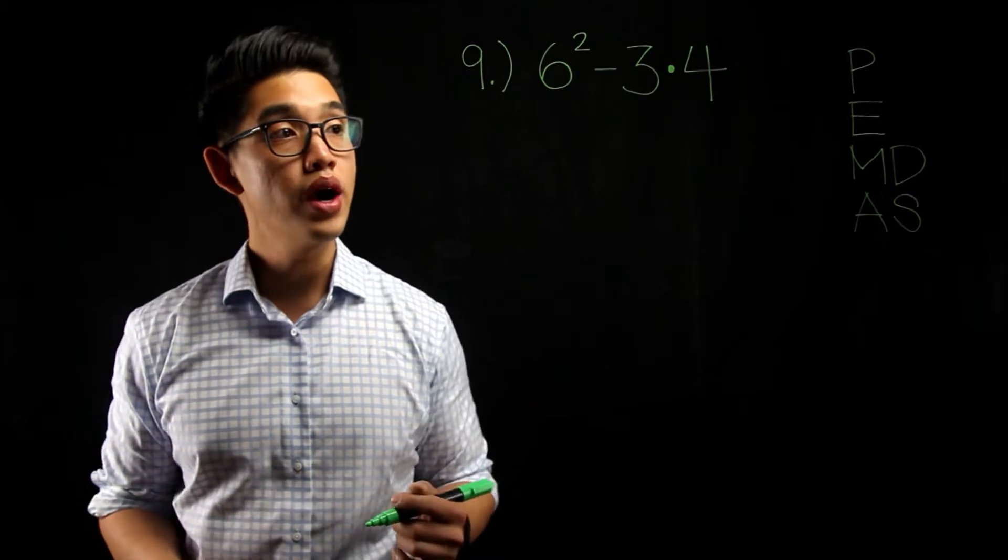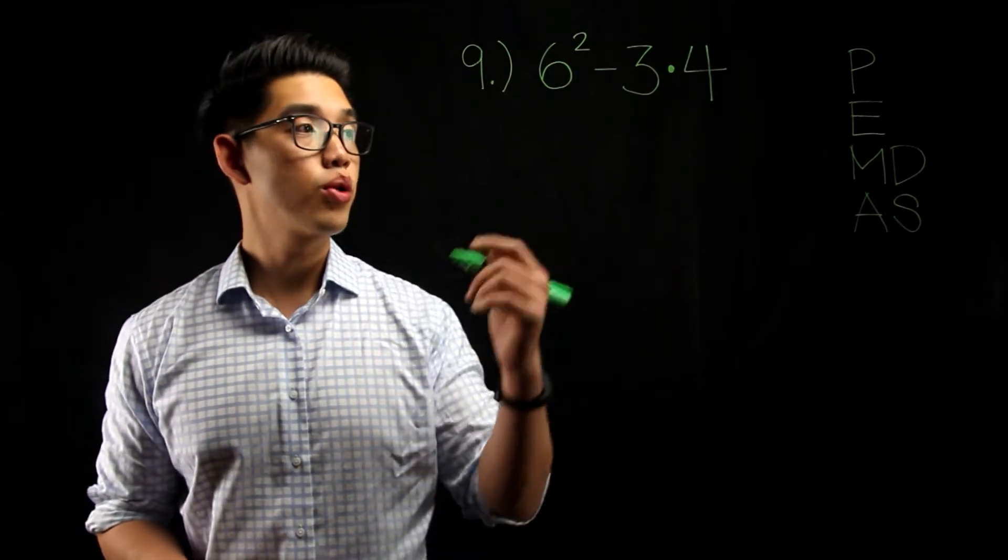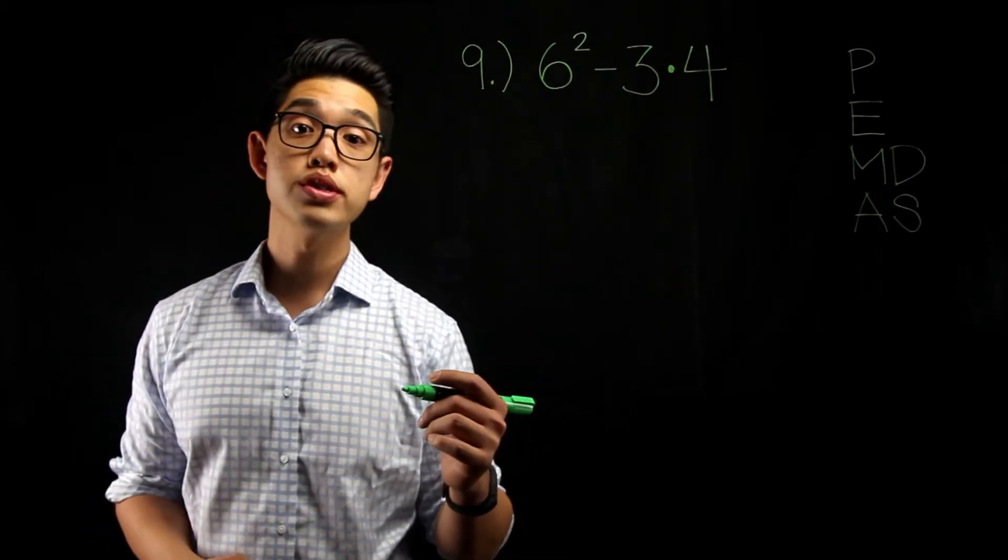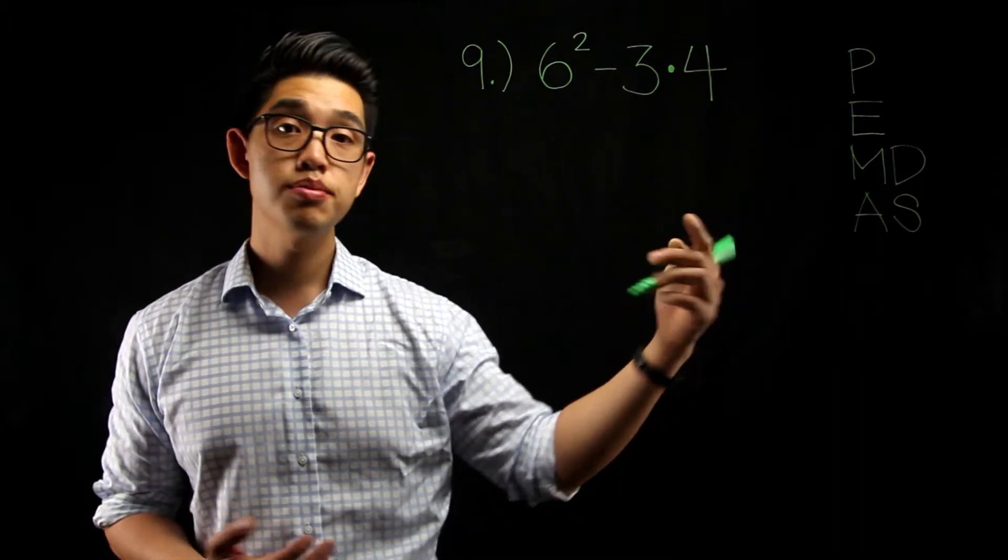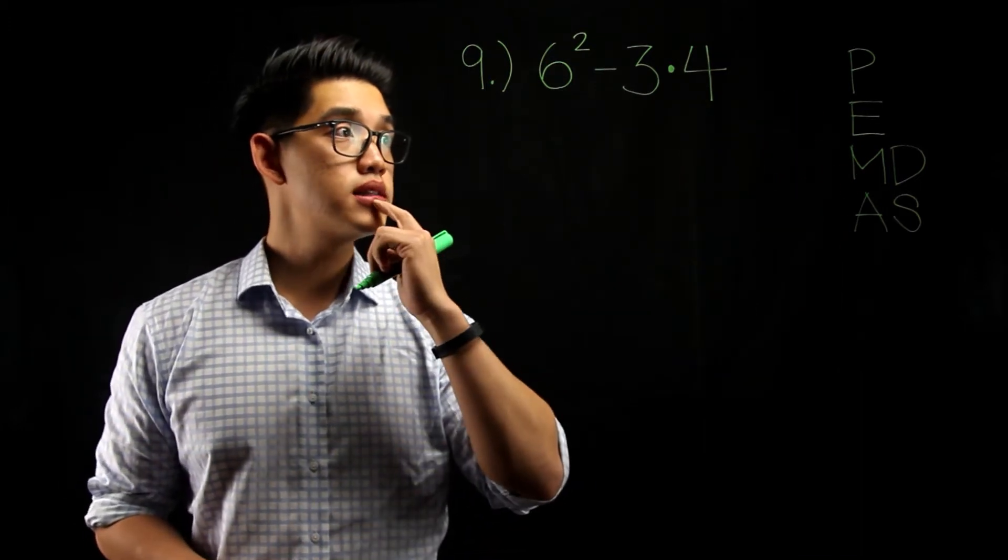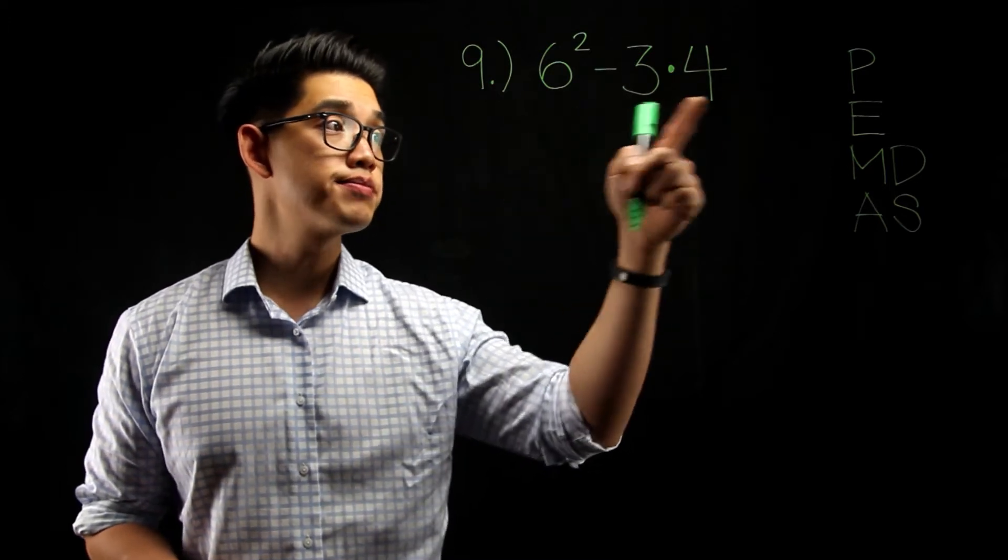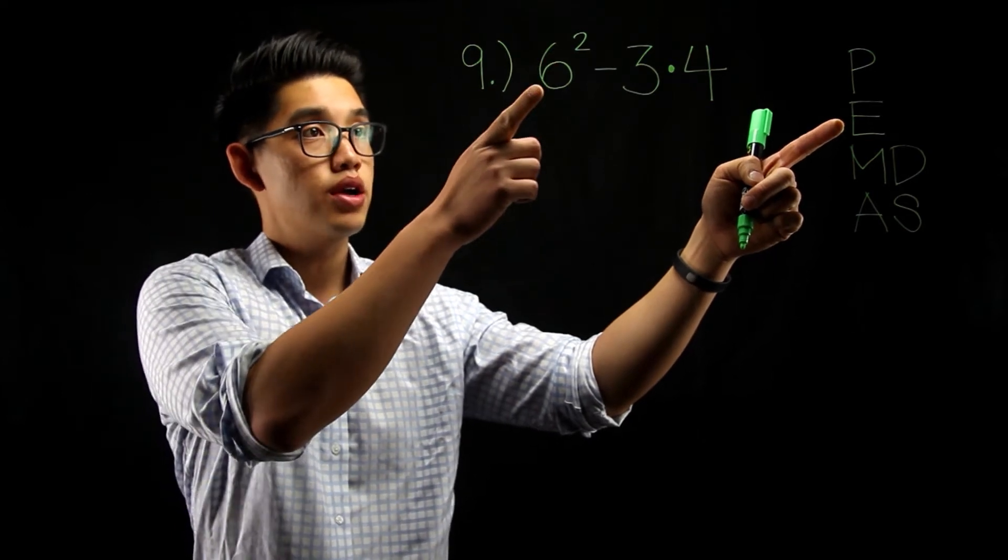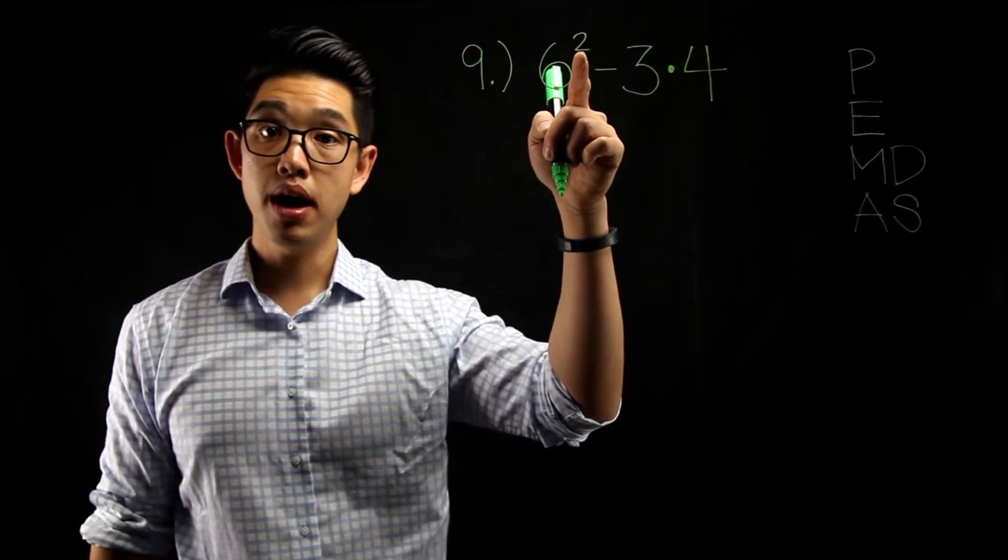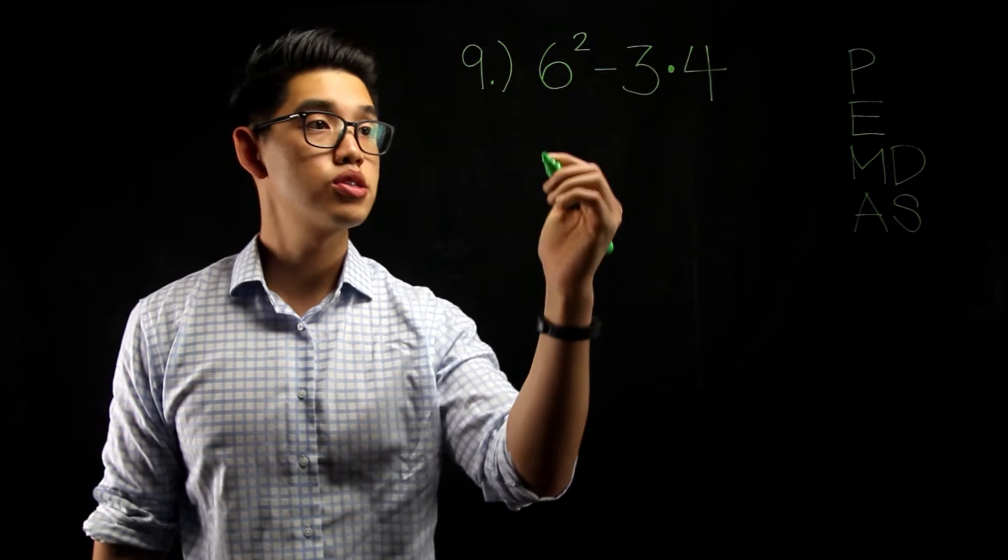Number 9 asks us to evaluate the expression. All we're going to do here is use the rules of order of operations, PEMDAS. First of all, let's see, are there any parentheses here? No, I don't think so. Are there any exponents here? Yeah, we see exponents right here. So 6 to the second power, which is 6 times 6, is 36.